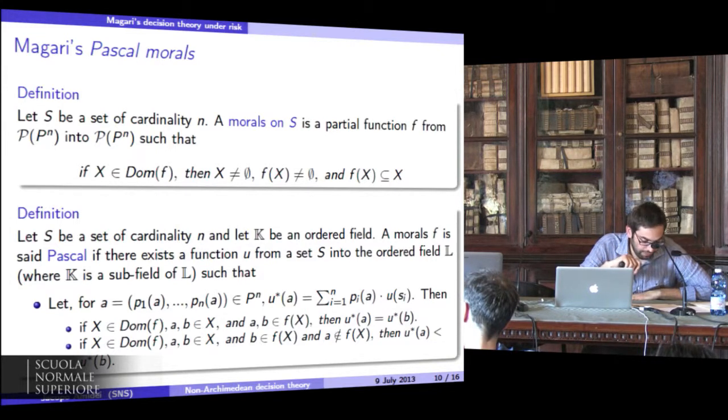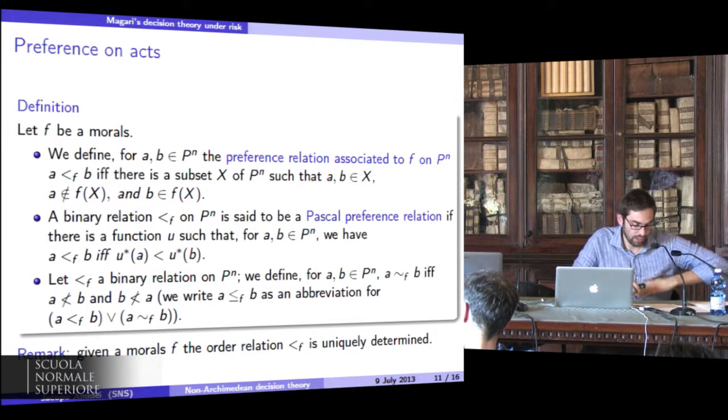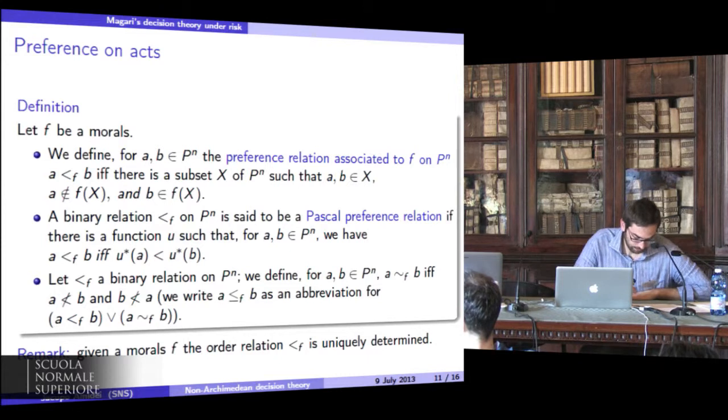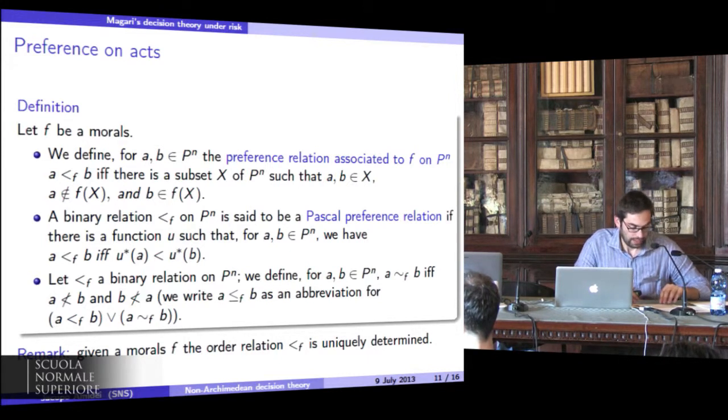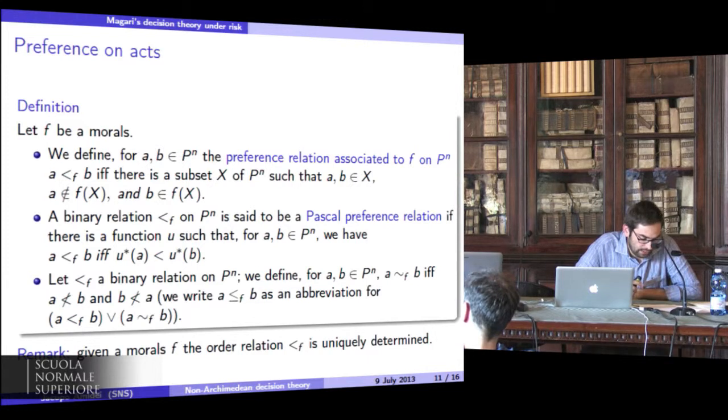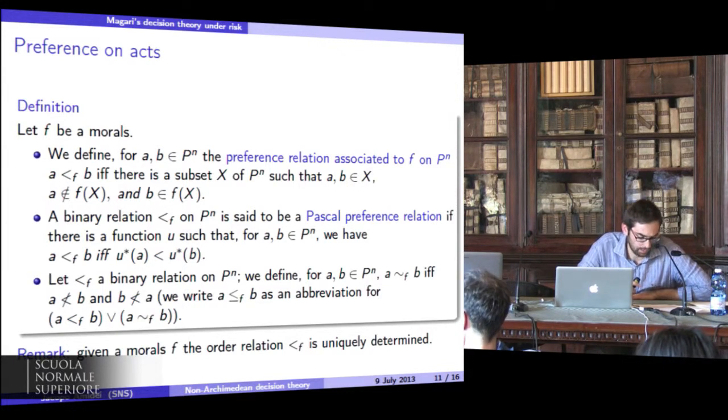Magari's problem is now to find general conditions that may establish when a moral is Pascal. Therefore, for this reason, he defines a preference relation over X. Given a moral F, we can define a preference relation over X by setting act A is not preferred to act B if and only if B belongs to F(X) but A doesn't belong to F(X). A preference relation is Pascal if and only if it respects the expected utility. So A is not preferred to act B if and only if the expected utility of A is strictly less than the expected utility of B.